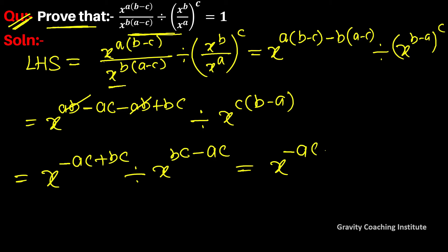When we divide, we subtract the powers. So equal to x to the power minus ac plus bc, and this bracket opens with sign change. So ac cancels with ac, and bc cancels with bc. Therefore x to the power 0 equals 1, which equals RHS. Hence proved.